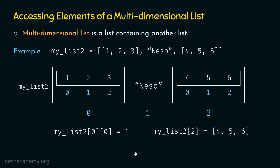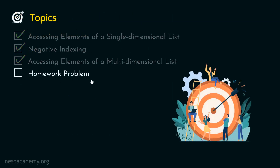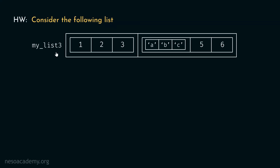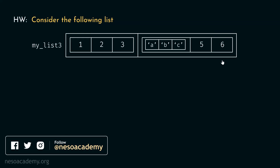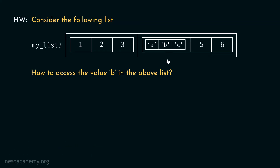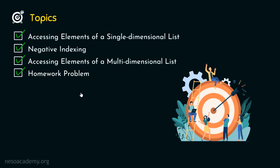Now let's move on to the homework problem. Consider the following list myList3, which consists of certain elements. The question is: how do you access the value B in that list? Please post your answers in the comments section. With this, we are done with this lecture. We have understood single-dimensional lists, negative indexing, and multi-dimensional lists and how to access their elements. Thank you for watching this presentation. I will see you in the next one.